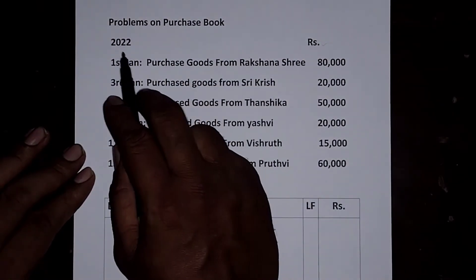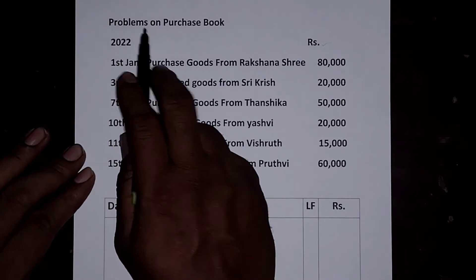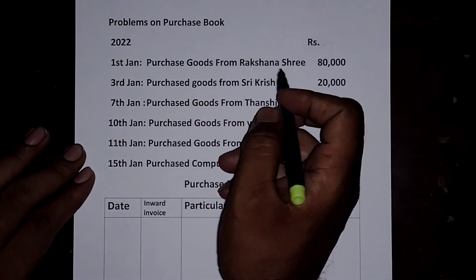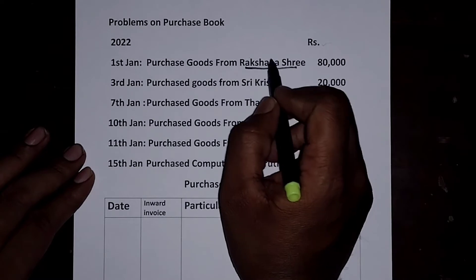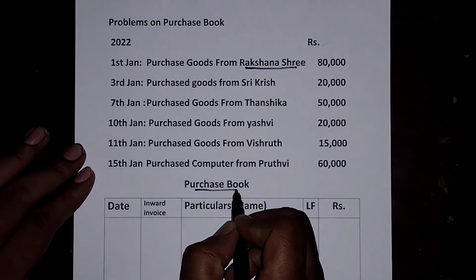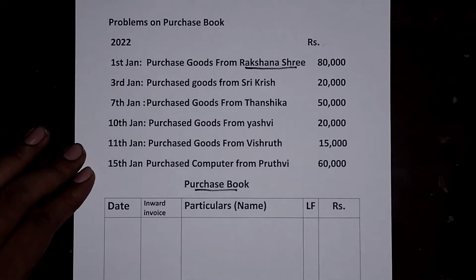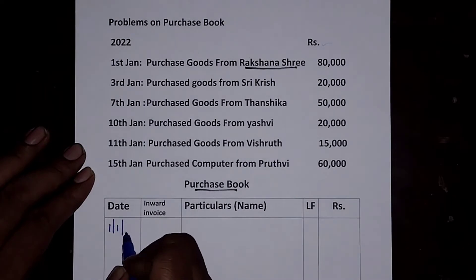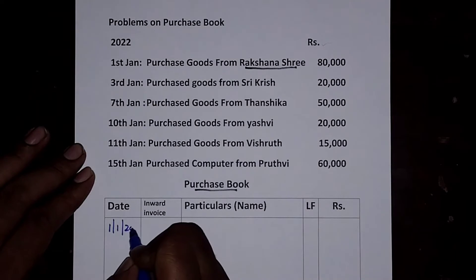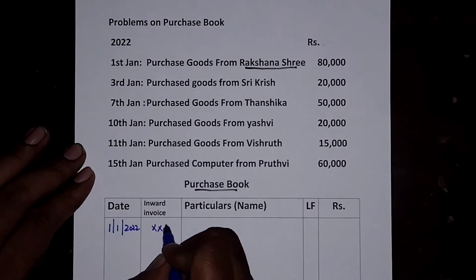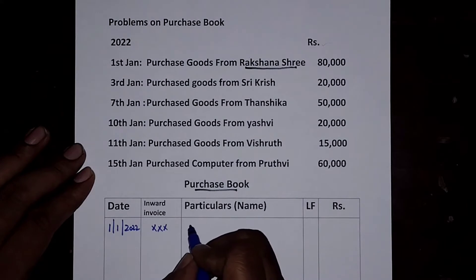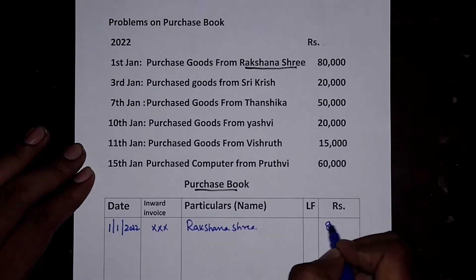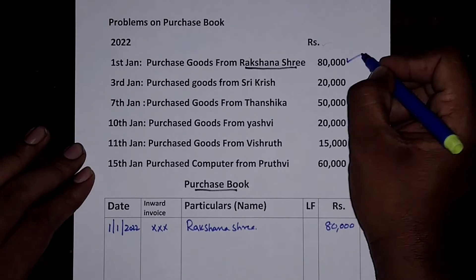Problems on Purchase Book. During 2022, purchases were made from different persons. Whenever the name of a person is given, it means goods were purchased on credit. Only credit purchases should appear in the purchase book; cash purchases should not. On 1st January 2022, purchased goods from Raktionastri for Rs. 80,000.